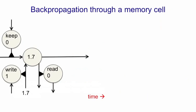Now I'm going to show you a picture of what backpropagation through a memory cell looks like. First, we're going to do a forward pass. At the initial time, let's suppose that the keep gate was set to 0, so we wiped out whatever information was in the memory cell before, and the write gate is set to 1, so the value of 1.7 coming from the rest of the recurrent neural network gets written into the memory cell, and we're not going to read it at this time, so the read gate is set to 0.